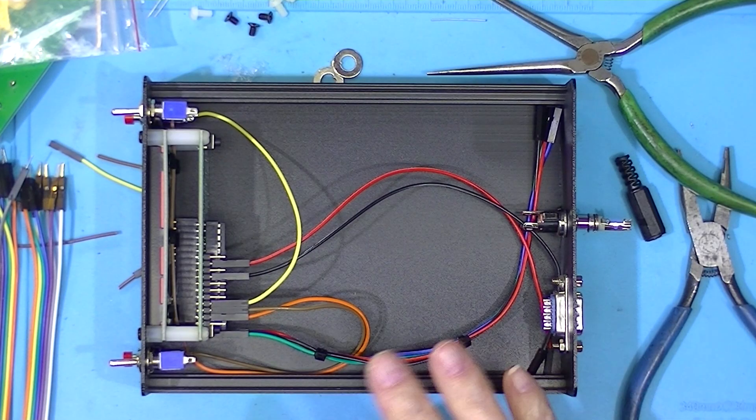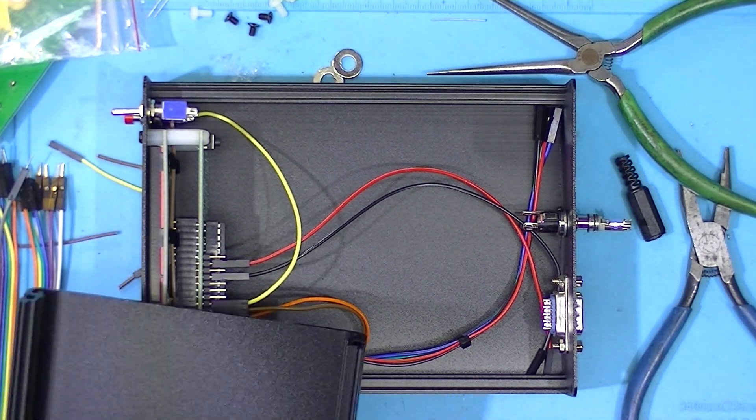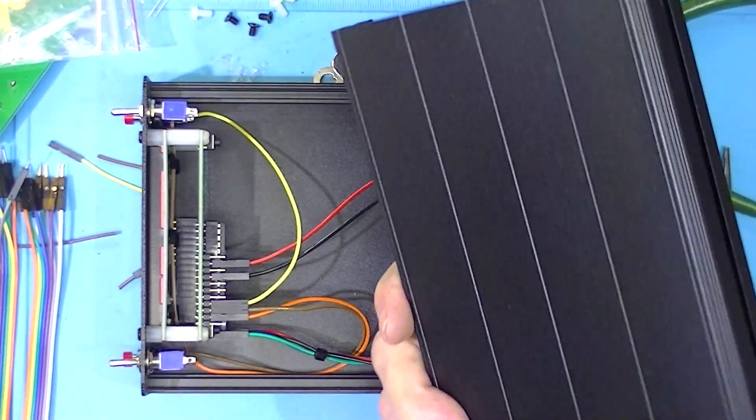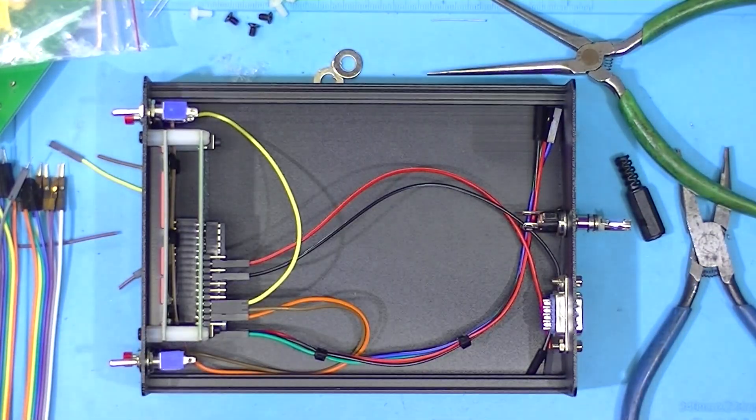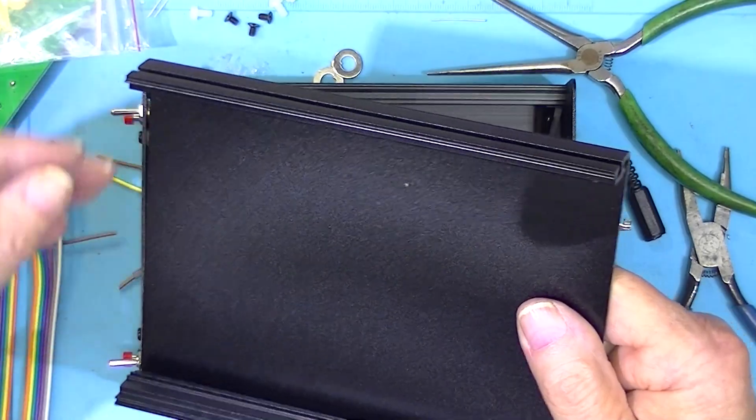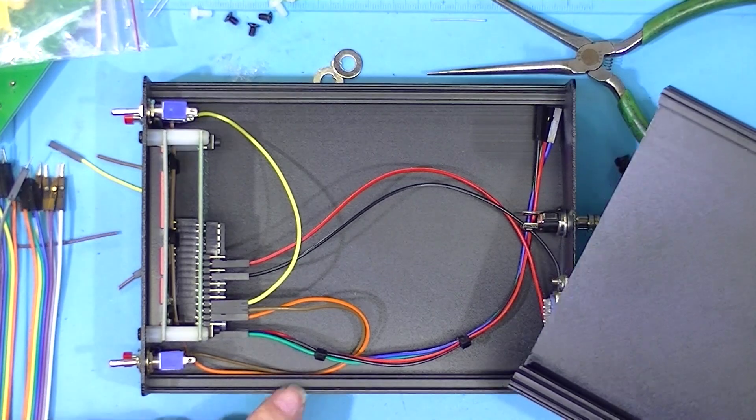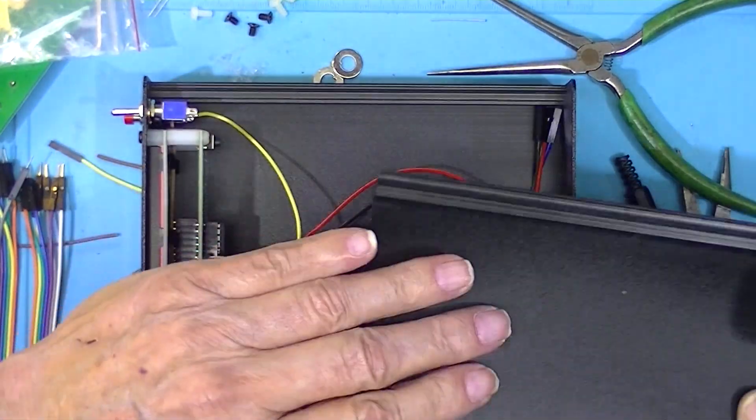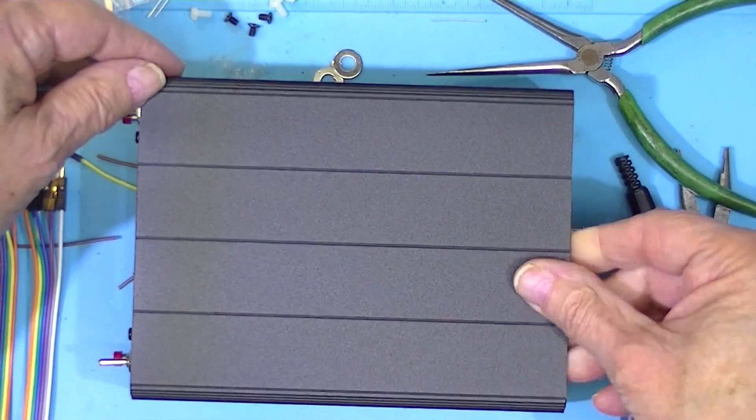Let me say something about these case halves—they are identical. Both have the lines in the top, but they're tongue and groove. One side is a tongue, the other side is a groove. You have to make sure you put the tongue on the grooved side. They recommend doing this with the screws loose.